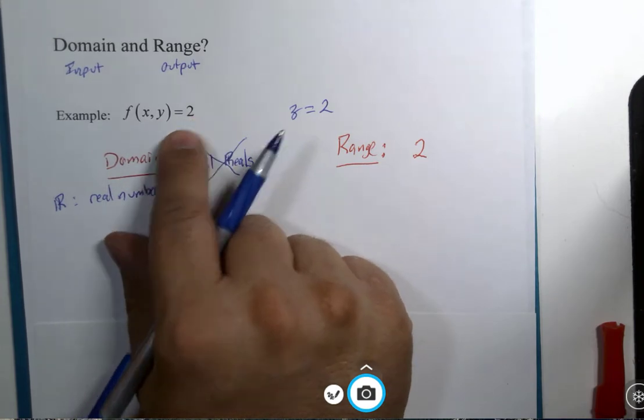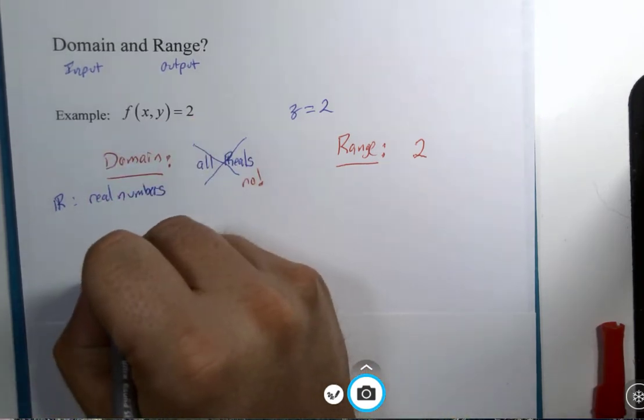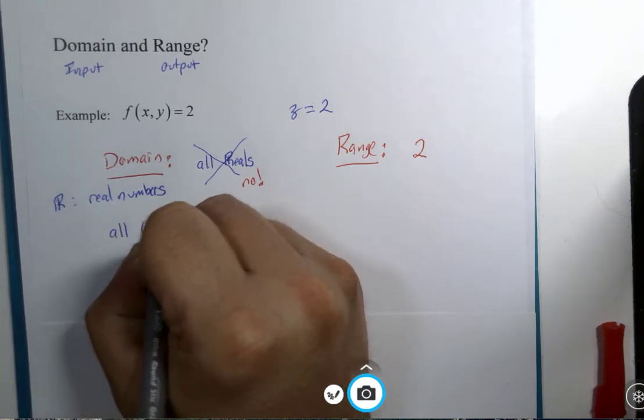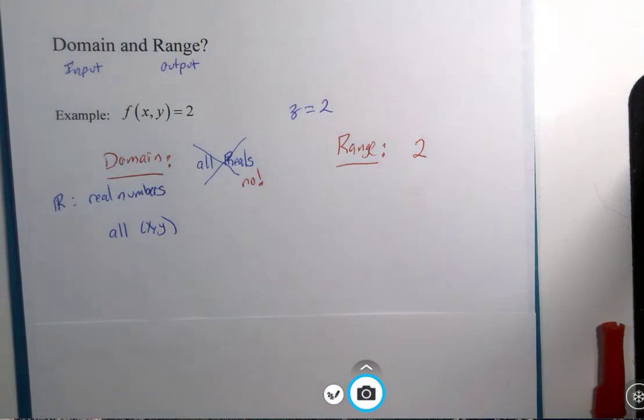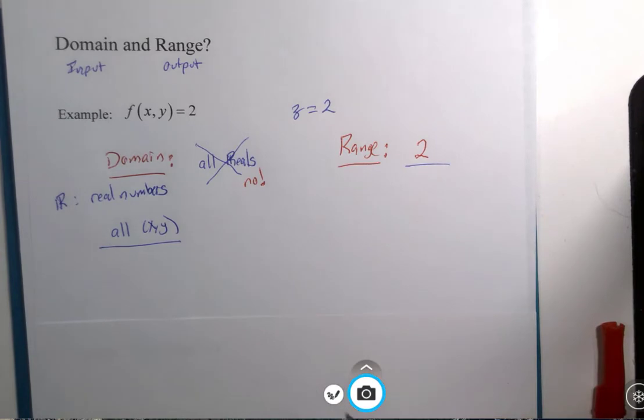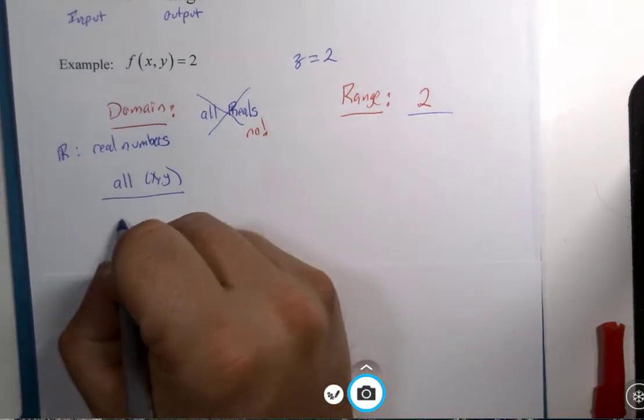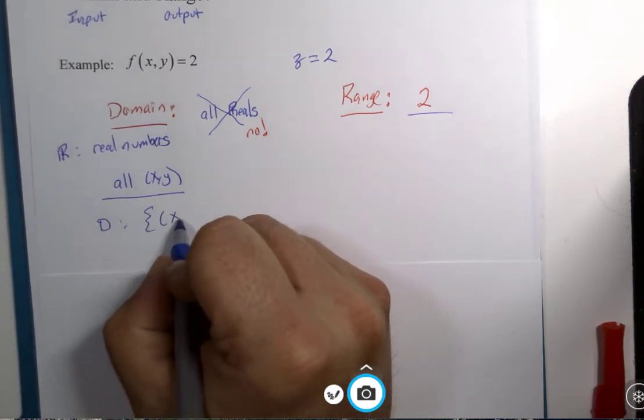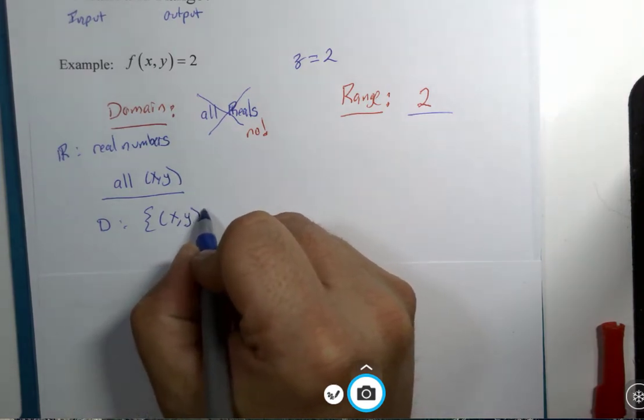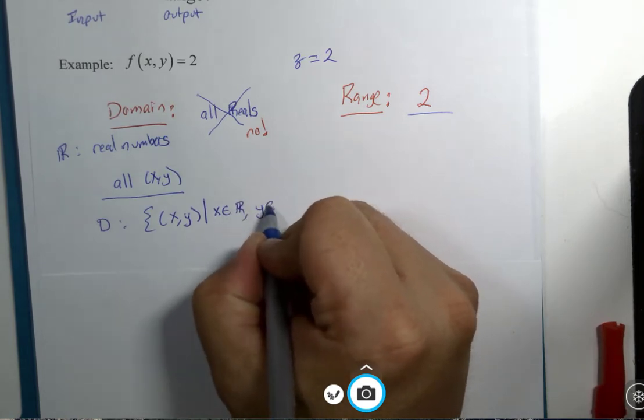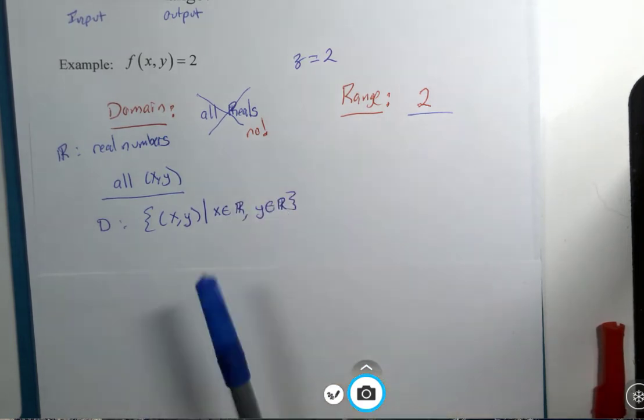This domain, we need to say, informally, all xy. If you wanted to get more formal, you could say something like the domain is the set of all x and y values such that x is real and y is real. This would be more formal.